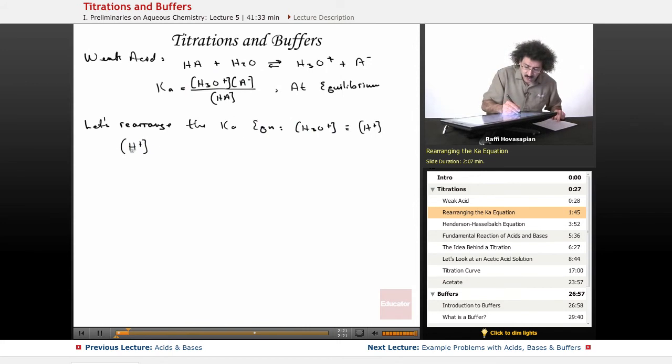I get the concentration of H plus is equal to Ka times the HA concentration divided by A minus.